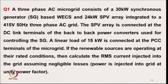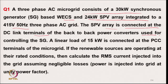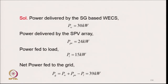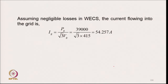Numerical Problem 1: A three-phase AC microgrid consists of a 30 kW synchronous generator based wind power energy converter and a 24 kW solar PV array, both connected to a 415 V, 50 Hz three-phase AC grid. A linear load of 15 kW is connected at the PCC terminal. If renewable sources are operating at rated condition, calculate the RMS current injected into the grid assuming negligible losses and unity power factor. Net power to the grid is 30 + 24 − 15 = 39 kW, giving a grid current of 54.257 A.